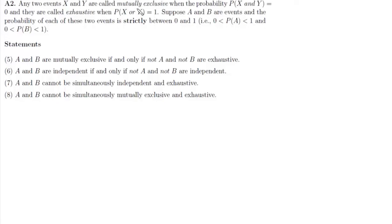Question number two: we are given two events A and B, and the probability of A and B strictly lies between 0 and 1. We need to determine which of the following statements are true. The first one is: A and B are mutually exclusive if and only if not-A and not-B are exhaustive.